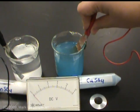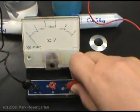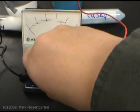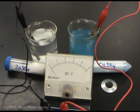Then we hook the copper up to the positive terminal of our voltmeter. Now, apparently, there's nothing happening. Our voltage is still zero.